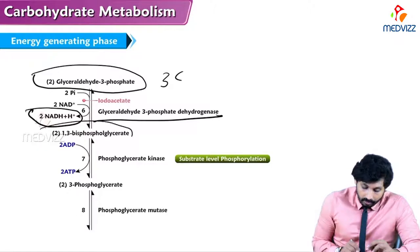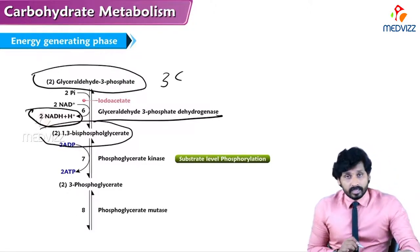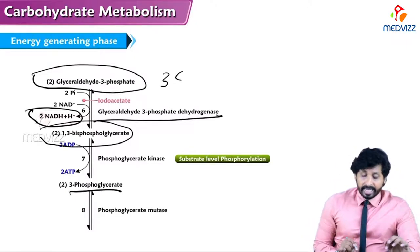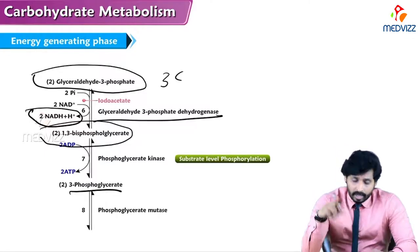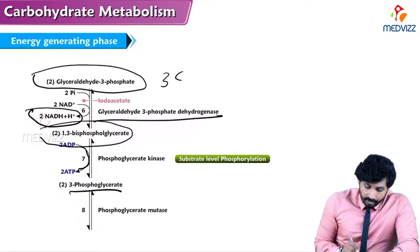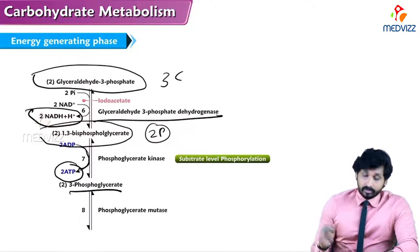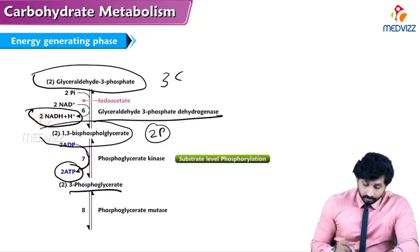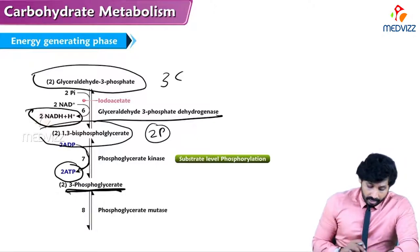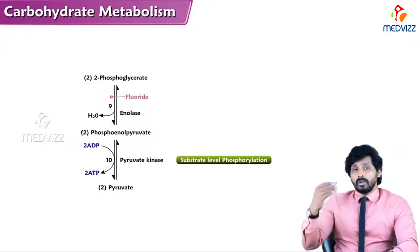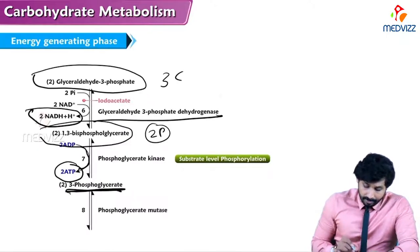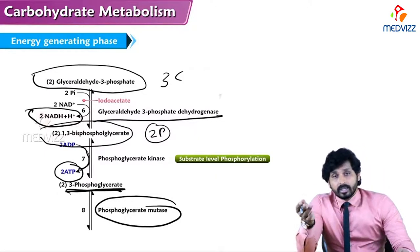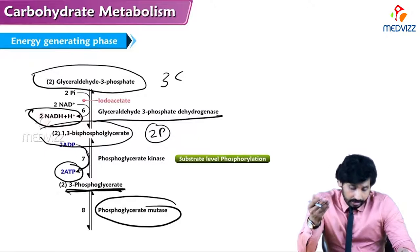1,3-Bisphosphoglycerate is converted to 3-phosphoglycerate — one phosphate is removed and transferred to ADP, generating two ATPs (one per molecule). In the eighth step, 3-phosphoglycerate is converted to 2-phosphoglycerate by phosphoglycerate mutase, which shifts the phosphate group from carbon three to carbon two.